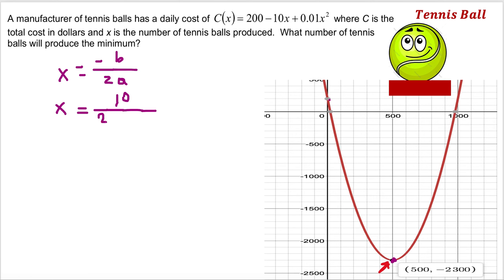If we multiply everything, x is going to be equal to 10 divided by 0.02. If we plug this into a calculator, x is going to be 500.